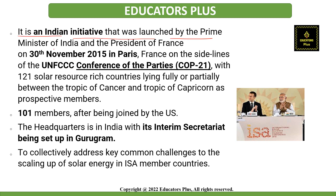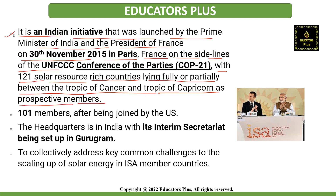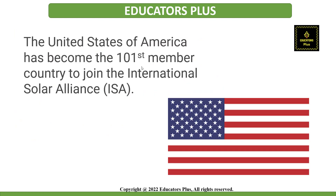Talking about its launch, it is an Indian initiative, launched by the Prime Minister of India and the President of France on 13th November 2015 in Paris, France, on the sidelines of the United Nations Framework Convention on Climate Change Conference of Parties 21 (COP21), with 121 solar resource-rich countries lying fully or partially between the Tropic of Cancer and Tropic of Capricorn as prospective members. Currently there are 101 members of the International Solar Alliance, after the United States recently joined. Its headquarters is in India, with its interim secretariat set up in Gurugram.